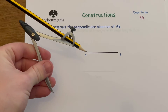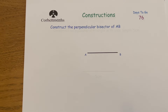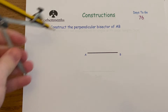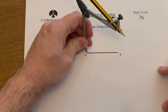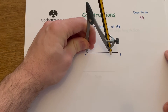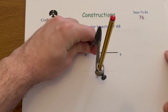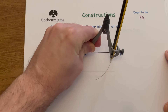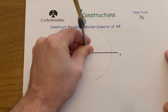We're going to need our compass, pencil — make sure your compass is tight and secure — and a ruler or straight edge to join up some points. The first thing we're going to do is put the point of the compass on the end of the line and set the compass so the pencil is over halfway along the line. Then we draw an arc like so — that's our first arc.